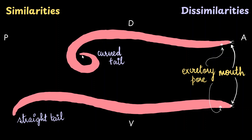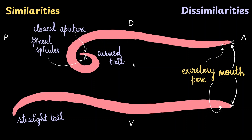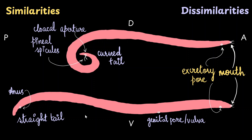The male has a cloacal aperture near the posterior end. This is an opening common to both the reproductive and digestive systems. The cloacal aperture is surrounded by penial spicules, which are useful during the mating process. The female has a genital pore or vulva in the anterior section of its body, and an anus at the posterior end. In the female, the reproductive pore and the digestive pore are completely separate.